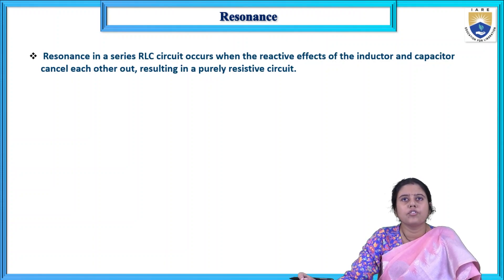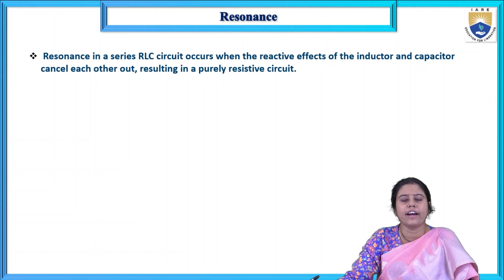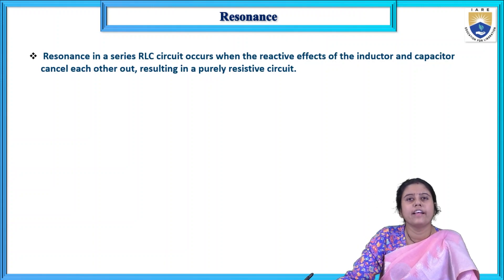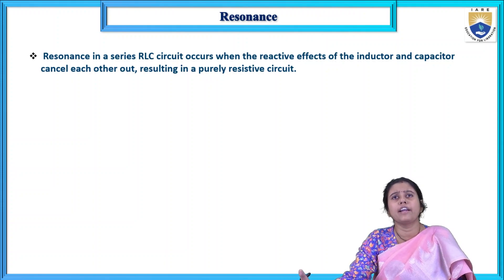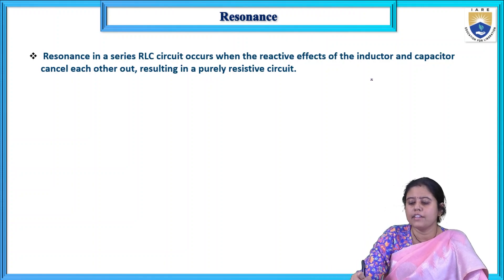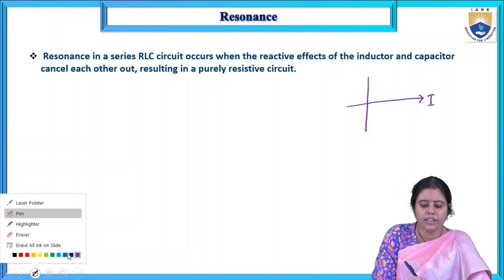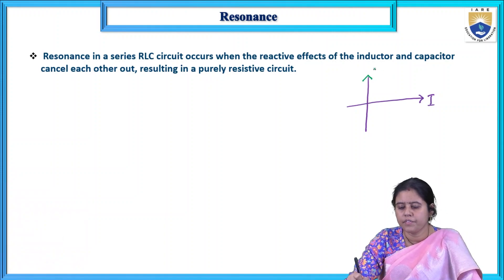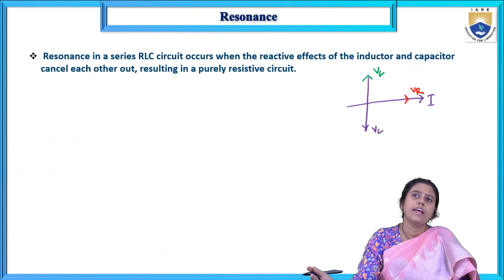Resonance in a series RLC circuit occurs when the reactive effects of the inductor and capacitor cancel each other out, resulting in a purely resistive circuit. As we draw now: green is VL, red is Vr, and purple is VC. This is the basic phasor diagram at resonance. The definition is very meaningful — you can understand it clearly.